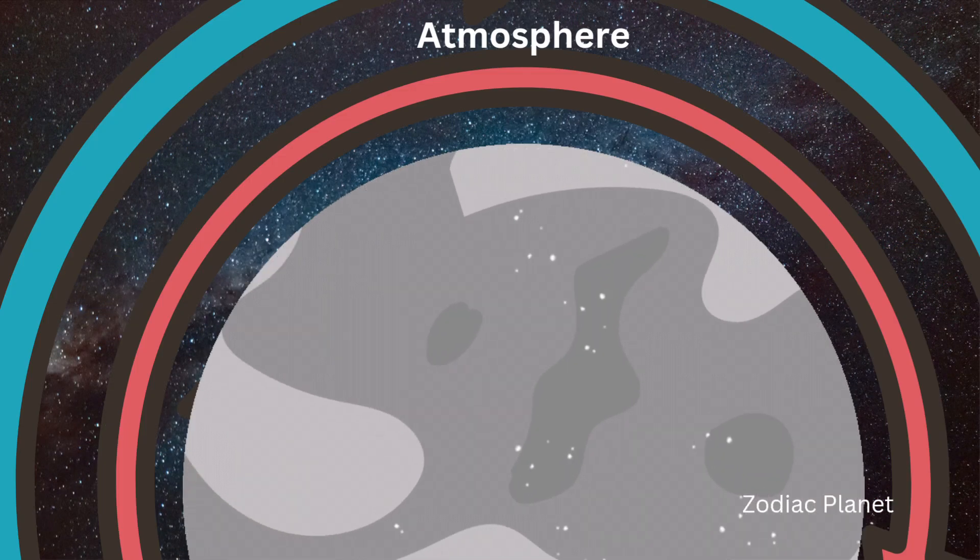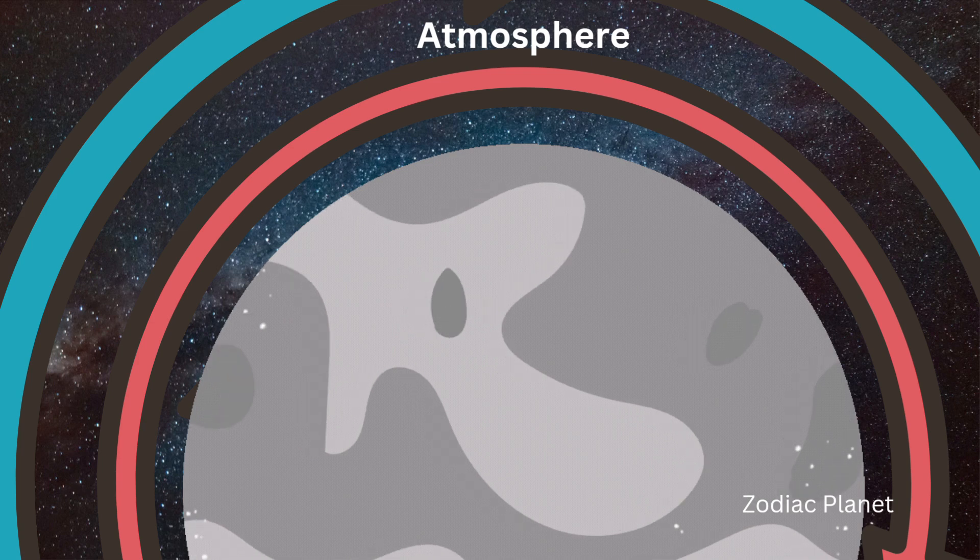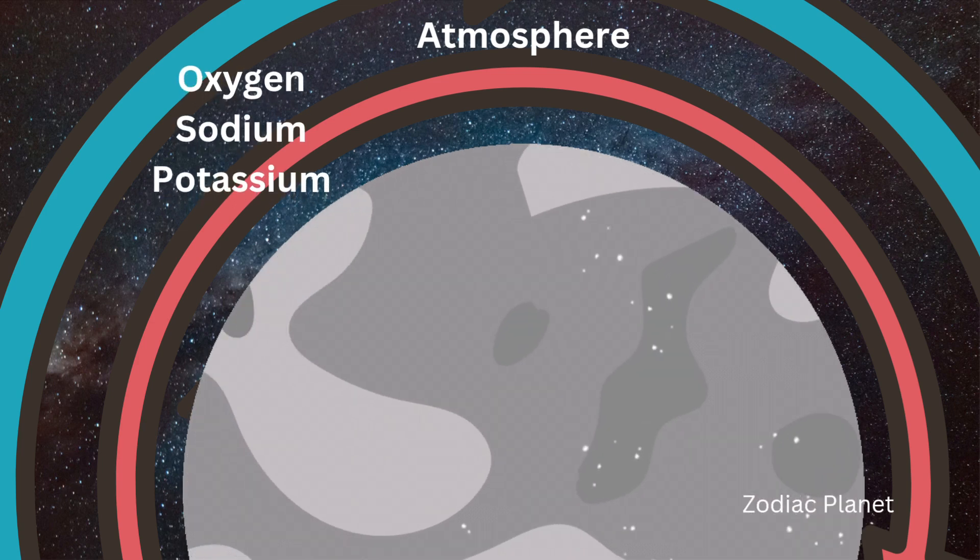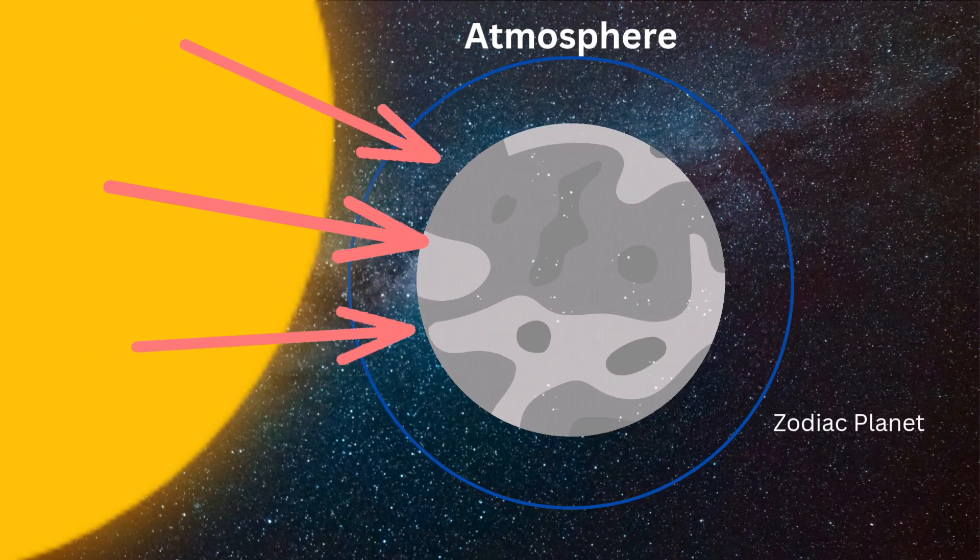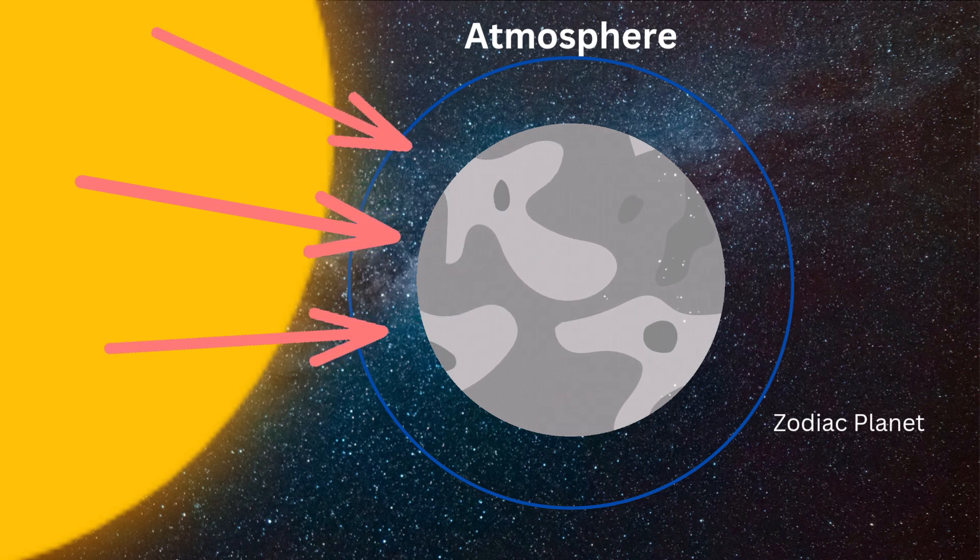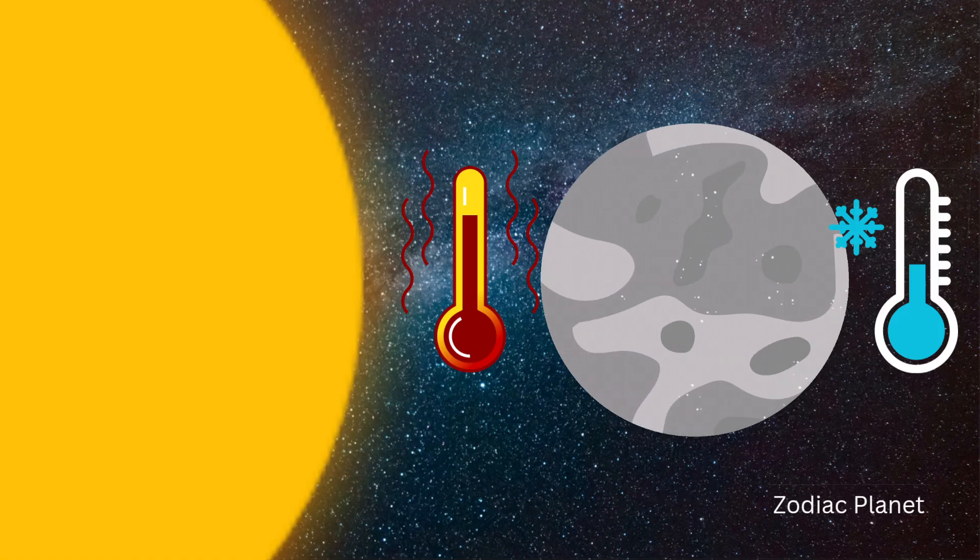It has a very thin atmosphere that is largely composed of oxygen, sodium and potassium. The atmosphere is so thin that it has very little protection from the Sun's radiation, which means Mercury experiences extreme temperatures.